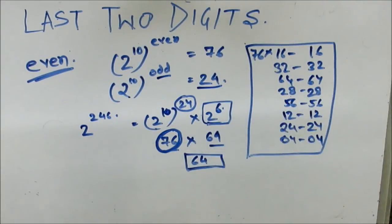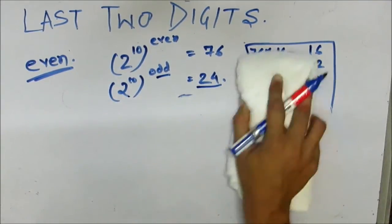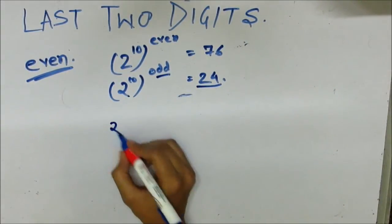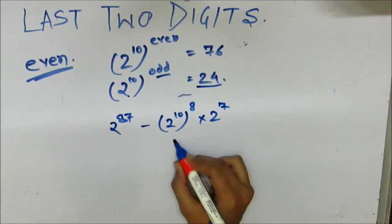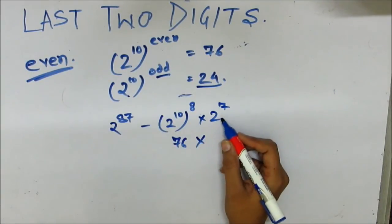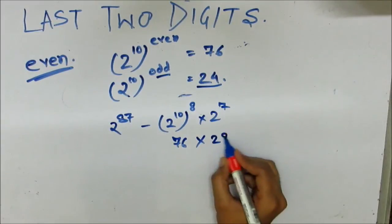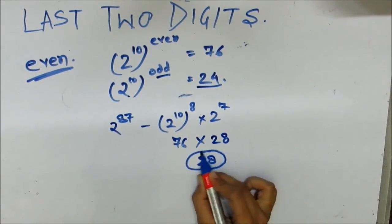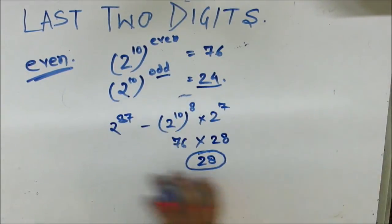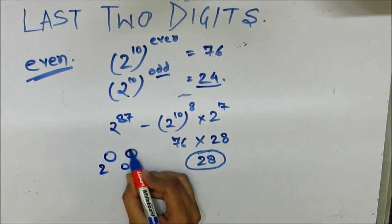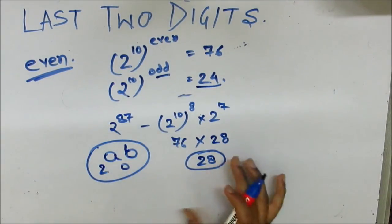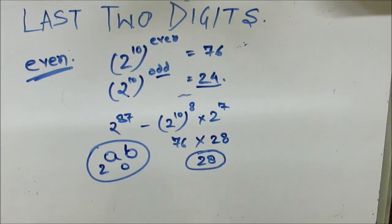For 2^87: write it as (2^10)^8 × 2^7. The exponent 8 is even, so (2^10)^8 gives 76, and 2^7 = 128, last two digits 28. So 76 × 28 gives last two digits 28. For any even number, you can break it into a power of 2 and an odd number component, then find the last two digits using these simple techniques. Keep watching collegepedia.in for more lectures. Thank you.